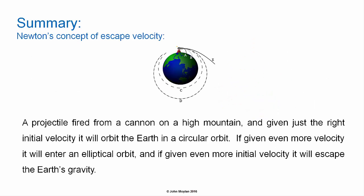Newton considered escape velocity in terms of a cannon fired horizontally from a very tall mountain. Newton realized that if you fired the cannonball with enough velocity, it would fall at the same rate as the curvature of the earth, and therefore go into orbit. If the cannonball was given an even higher initial velocity, it would enter first an elliptical orbit, and then with a greater initial velocity still, it would escape the earth's gravity entirely.